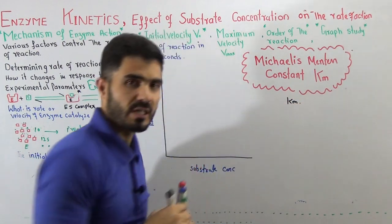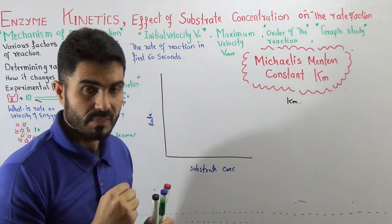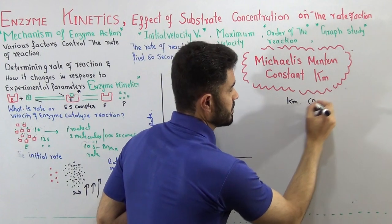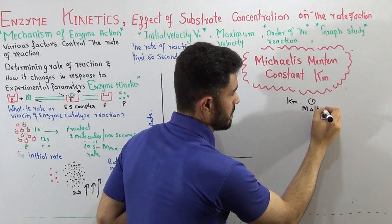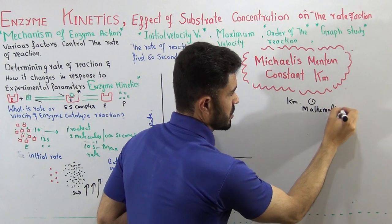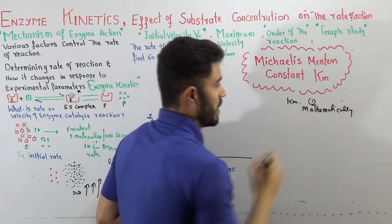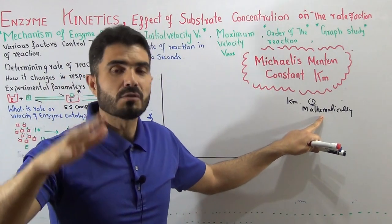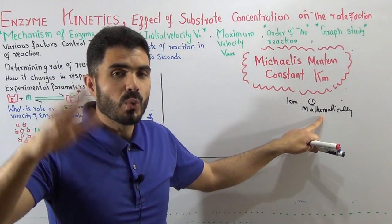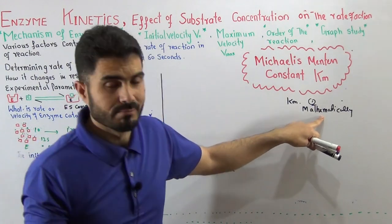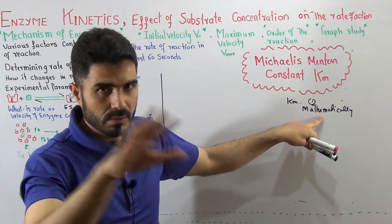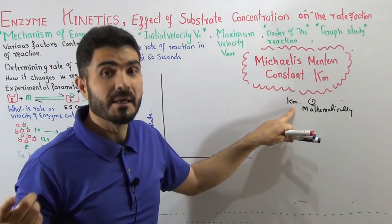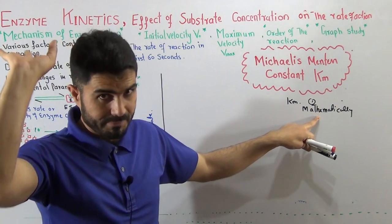The Michaelis-Menten constant Km can be defined in three ways. Number one: mathematically. It can be defined in a video lecture where we will derive the Michaelis-Menten equation. In that derivation I will tell you what is Km mathematically - definition number one, but not now.